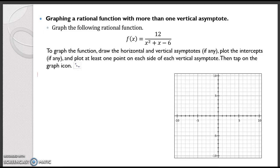The first step is to find f of 0. When we plug in 0 we're going to get the y-intercept, so that's going to be 12 over negative 6 which is negative 2, so we have our y-intercept at (0, -2).